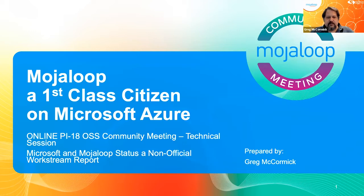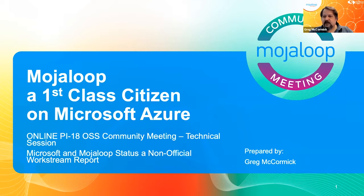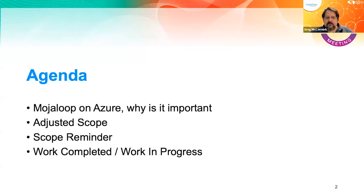This isn't really an official work stream within Moja Loop — it's more of an adjacent thing we're doing for Microsoft. Keep in mind that Microsoft is the customer here, so we're doing this for their benefit: to make it run on Azure and consume Azure resources. There may be some generic things like the Helm charts we discussed, but we're not intending to be generic — we're intending to work with Azure and use Azure.